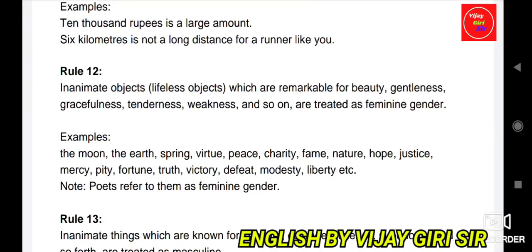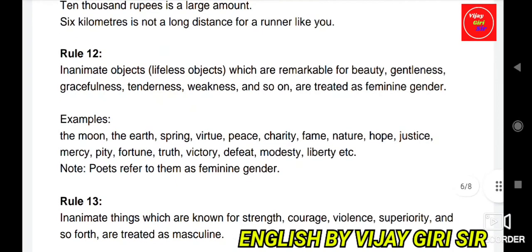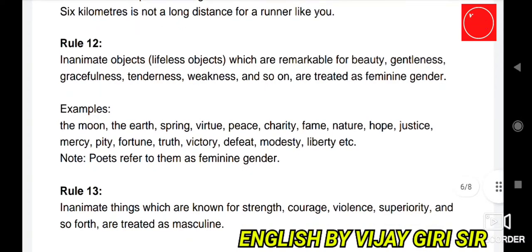Rule 12: Inanimate objects known for beauty, gentleness, gracefulness, tenderness, weakness, and so on are treated as feminine gender. For example: the moon, the earth, the spring, virtue, peace, charity, fame, nature, hope, justice, mercy, pity, fortune, truth, victory, defeat, modesty, liberty, etc. are referred to as feminine gender by poets.